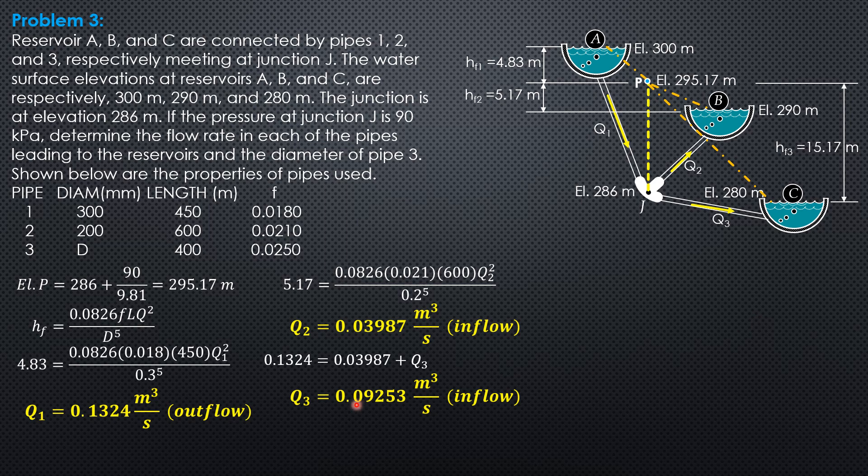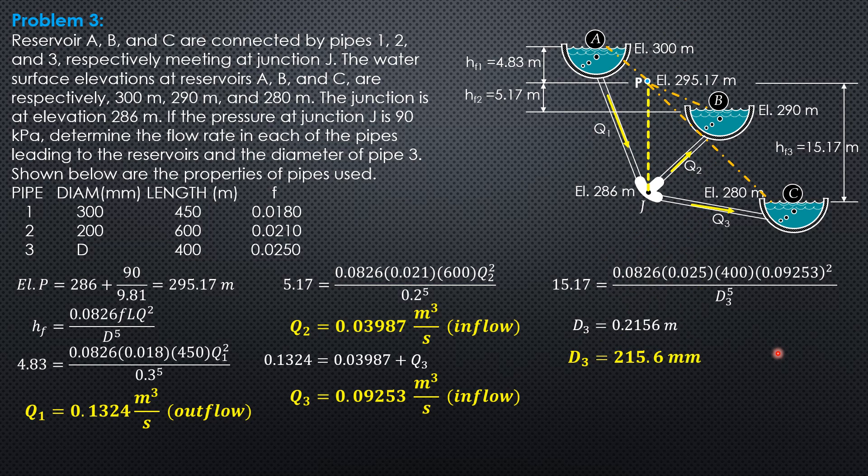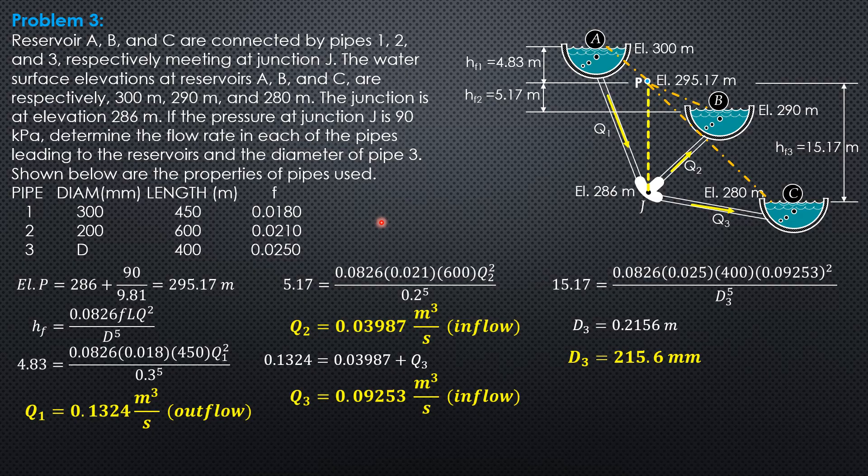Then knowing Q3, we can now compute this unknown diameter of pipe 3. Using the same formula, HF3, 15.17 equals 0.0826, friction factor 0.025, length 400, 0.09253 square over diameter of pipe 3 to the 5th. Diameter of pipe 3 therefore is 0.2156 meter or 215.6 millimeters. So that's it for this problem.